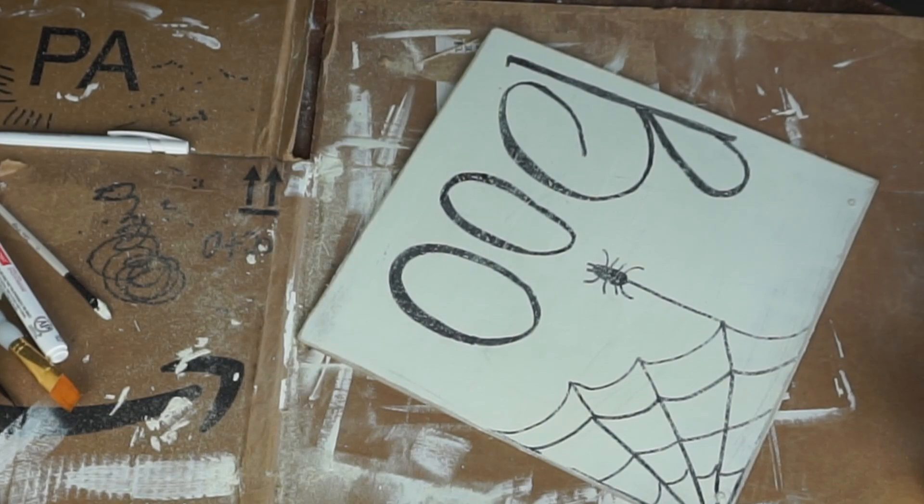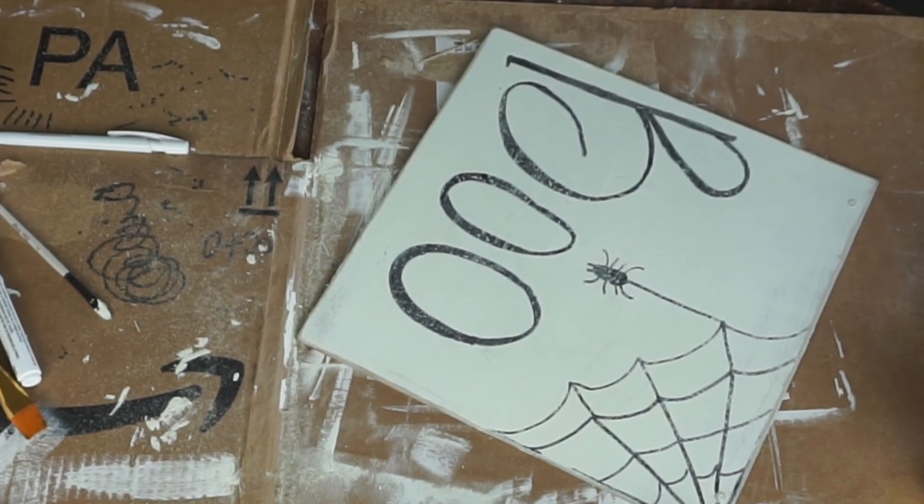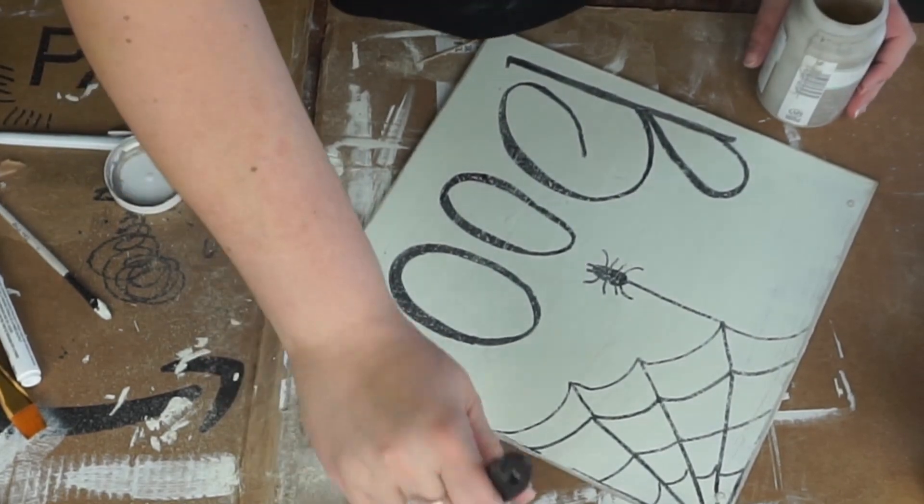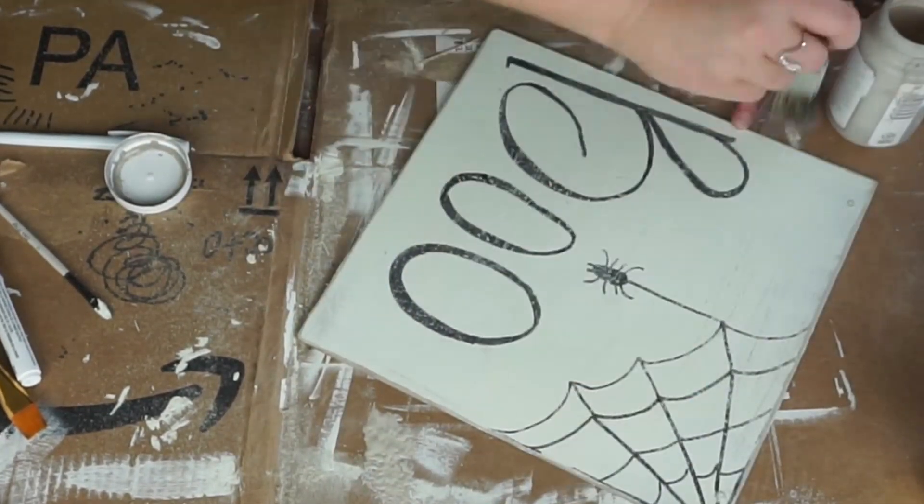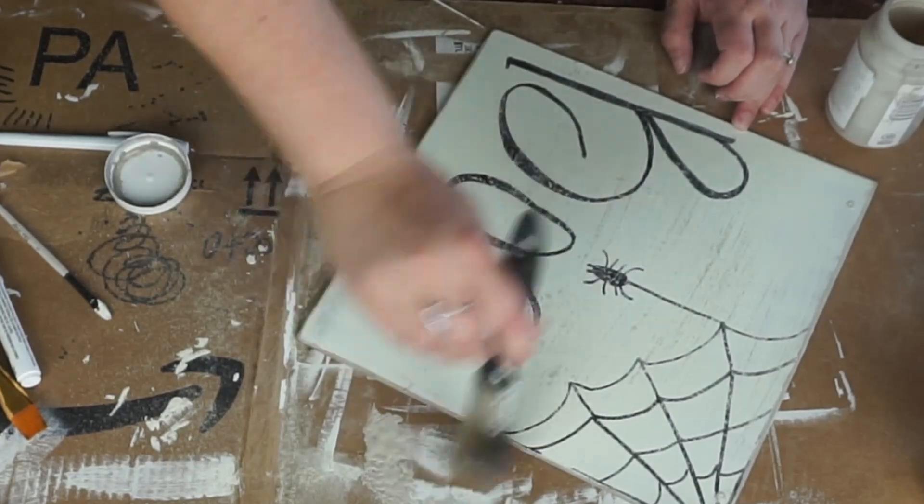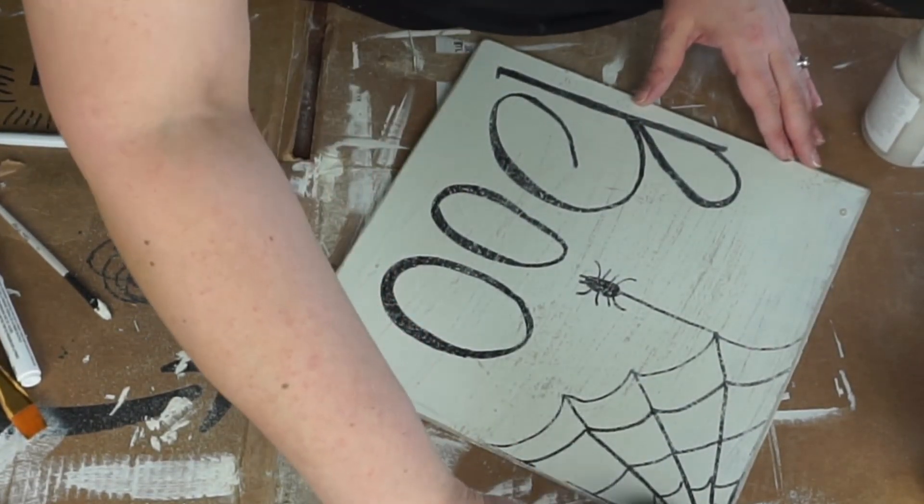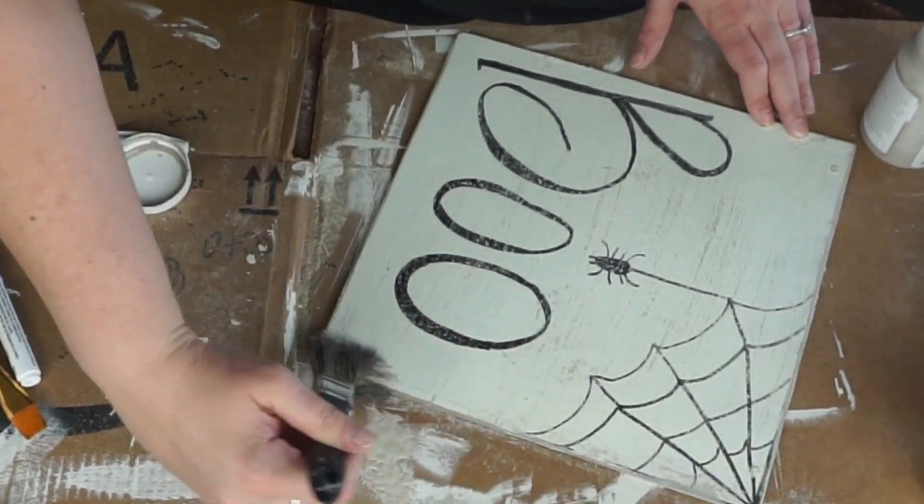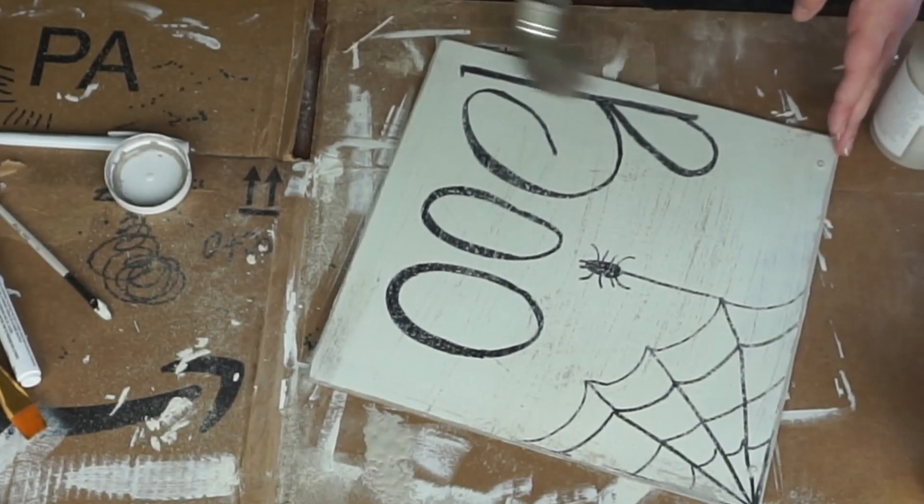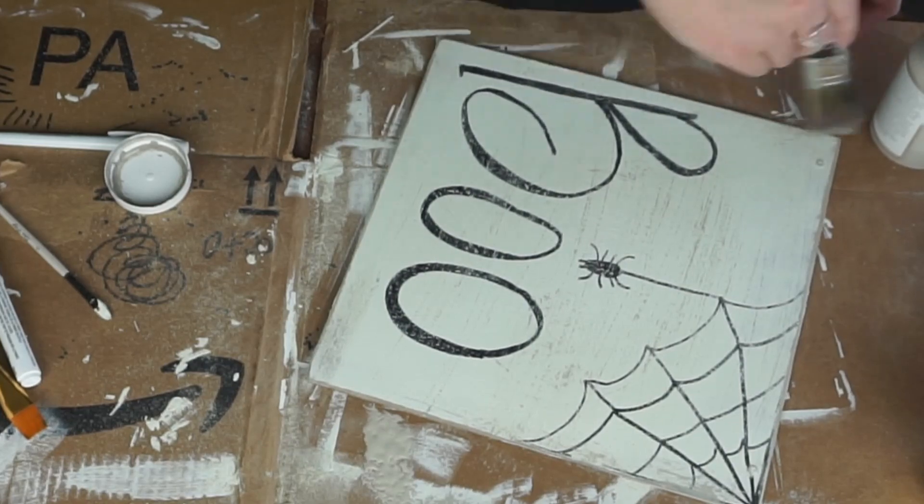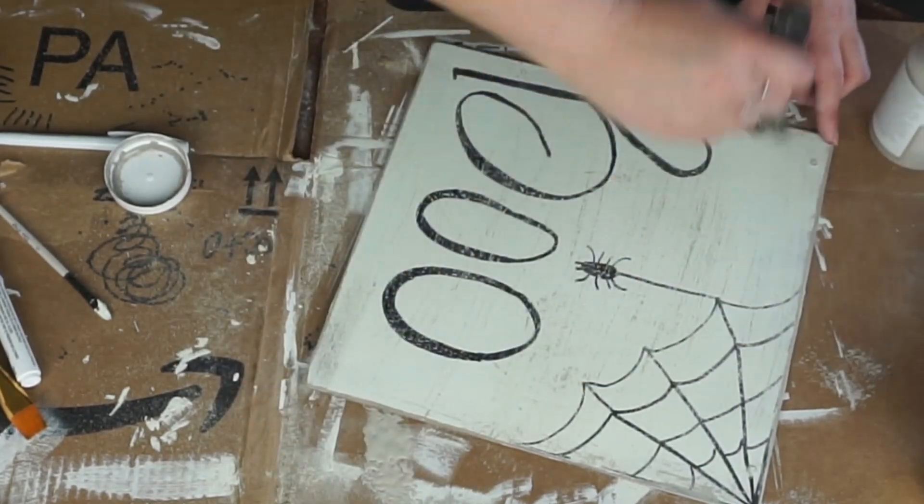After I distressed it, I decided I wanted it to look even more rustic. So I took some mineral chalk paint and I dry brushed on top of it, and I think that totally made it even better. I did that for both of the signs. All I did was just take my brush with a little bit of paint on it and just dry brush right over the sign.